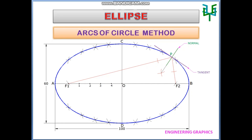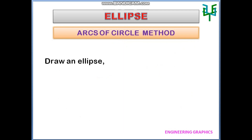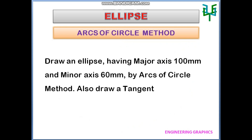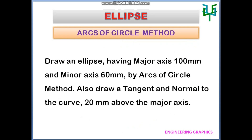In this video, we are going to discuss the construction procedure of an ellipse by arcs of circle method. Consider a problem: draw an ellipse having a major axis of 100 mm and minor axis of 60 mm by arcs of circle method. Also draw a tangent and normal to the curve 20 mm above the major axis.